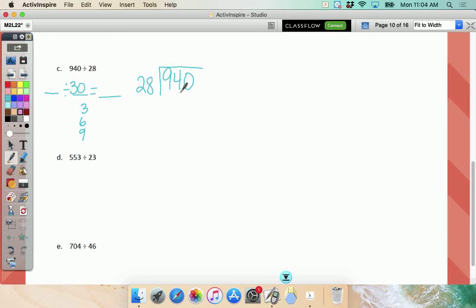So I'm going to do 940 divided by 28. And what am I going to round 28 to? 30. And I'm going to skip count by threes. Now, before I do that, I skipped a step. I've got to check the first two numbers. Is 94 large enough to make 28 groups out of? Totally. And I'm going to need two estimate lines.